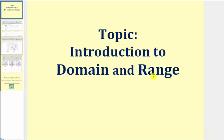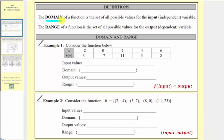Welcome to an introduction to domain and range. The domain of a function is a set of all possible values for the input variable, also known as the independent variable, which is often x. And the range of a function is a set of all possible values for the output variable, or the dependent variable, which is often y.